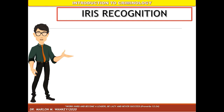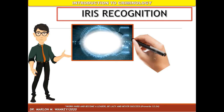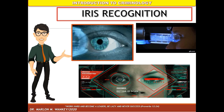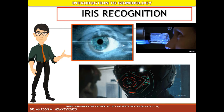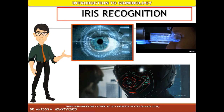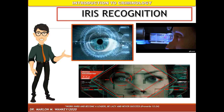Another scientific method of identification is iris recognition. It is an automated method of biometric identification that uses mathematical pattern recognition techniques on video images of one or both irises of an individual's eyes, whose complex patterns are unique, stable, and can be seen from some distance. This method can also help law enforcers to identify the true identity of a person.